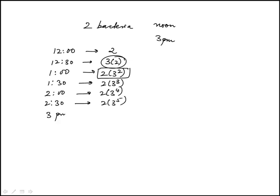At 3 p.m. it would be 2 times 3 to the 6, so that's the one we have to compute. You can use a calculator, or 3 to the 4 is 81.